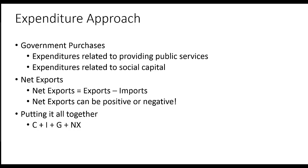To put it all together, to calculate GDP using the expenditure approach, we add consumption plus investment plus government purchases plus net exports. That gives us the equation: C + I + G + net exports. You should commit that to memory because we're going to use it a lot.